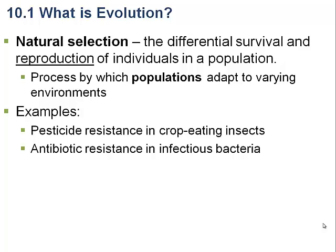As an example, we see pesticide-resistant insects that consume crops. The first year that a farmer uses an insecticide on a field, 99% of the insects are killed. The next year, a lower percentage are killed, and within a decade in some cases, that insecticide may be almost useless for that particular insect. This simply results from the fact that all the insects that are susceptible to the insecticide die, while the ones that are resistant survive.